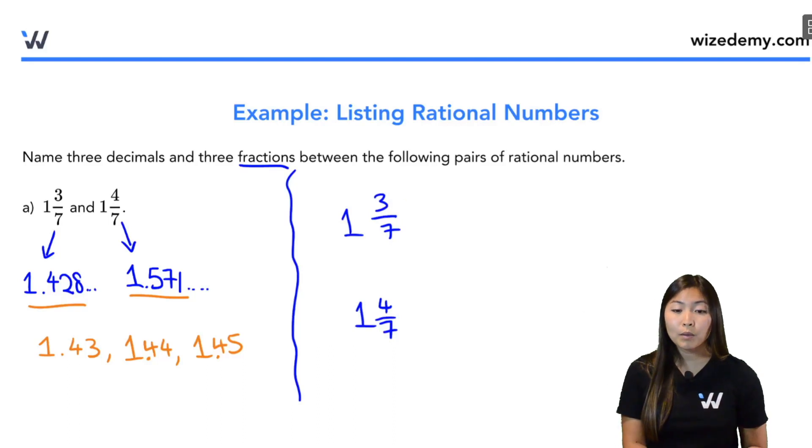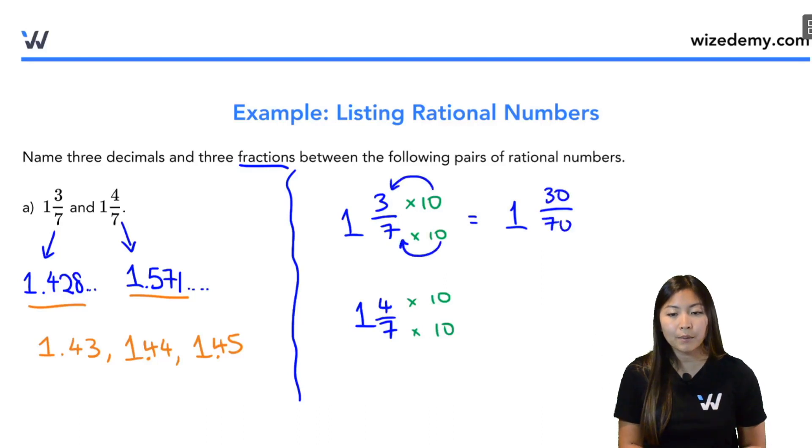So when it comes to multiplying numbers, my favorite is actually 10 or 100 or 1,000, things with zeros, because it makes the multiplication really easy. So we have the whole number 1. Now for the fraction part in the numerator, I'm just going to put that 0 next to my number so I get 30. And denominator, same thing. Put that 0 next to my number, I get 70. So 1 and 30 out of 70. That's the same as 1 and 3 over 7, I just made the numbers look a little bigger.